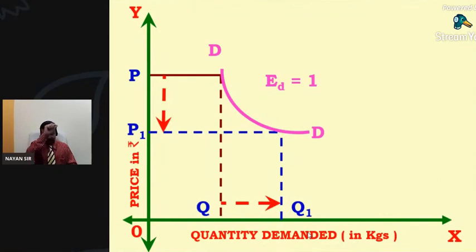So what is the original demand? OQ. And what is the rise in the demand? Naturally, price falls, demand is going to increase. So OQ and OQ1. So therefore, the flow or the demand curve is rectangular hyperbola.